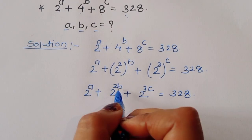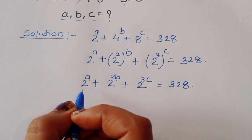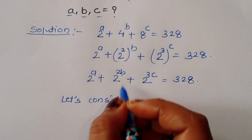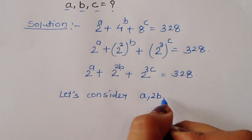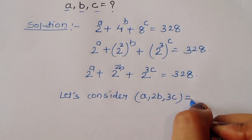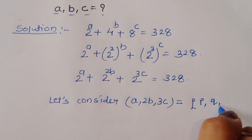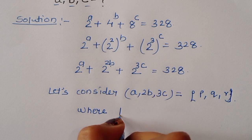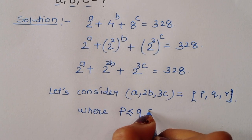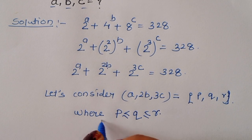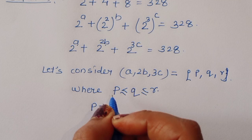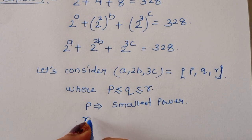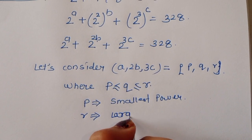Now we have powers A, 2B, and 3C. Let's consider A, 2B, and 3C equal to P, Q, and R respectively. In this way, P is the smallest power and R is the largest or biggest power.